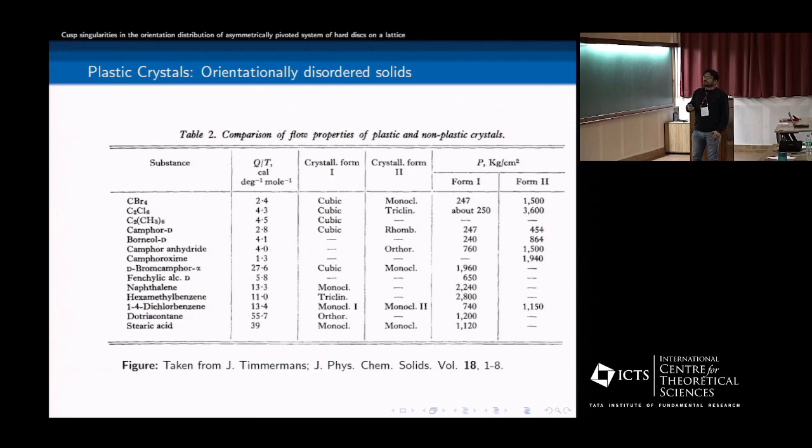So why the name plastic? Actually, it's because of the flow properties. So for example, if we can see, so this phase one is plastic form, plastic crystal and this form two is crystal phase. And Timmermans actually noticed that the pressure to go through a hole is very small as compared to the crystal. So that's why it's plastic. And he also noticed that the entropy of fusion is also very small, it's less than five calories per degree per mole. For example, for these up till here, it's plastic, and here they are not plastic. So they don't go to plastic phase, plastic crystal phase.